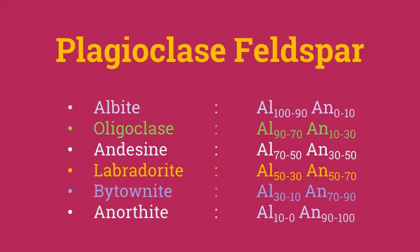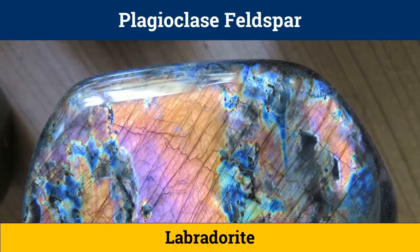The varieties of plagioclase Feldspar may be described by the relative composition of pure albite and pure anorthite in them. In this way, the solid solution series is divided into six minerals: albite, oligoclase, andesine, labradorite, bytownite, and anorthite. Out of these plagioclase Feldspar, labradorite shows labradorescence — a change of color where the mineral changes its color upon turning the specimen.